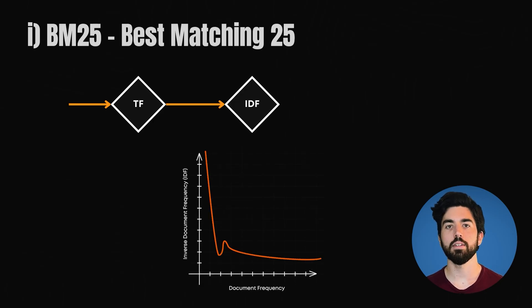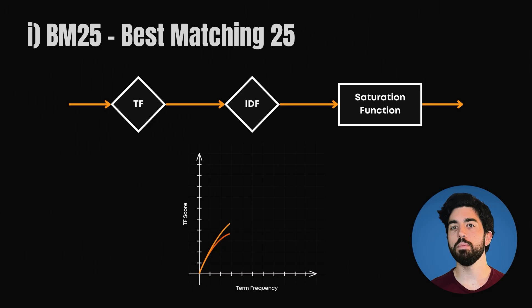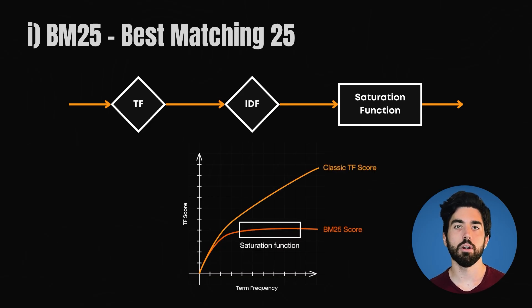Then, it gives extra weight to words that are rarer across all documents, which is known as inverse document frequency, or IDF. It also makes sure that longer documents don't automatically get higher scores just because they have more words. Finally, it recognizes that just because a word appears a lot, it doesn't make it drastically more important, thanks to a smart saturation function.